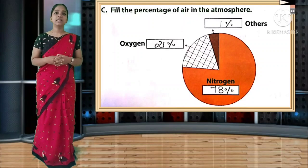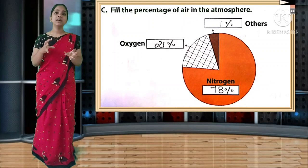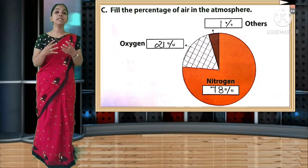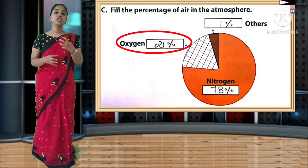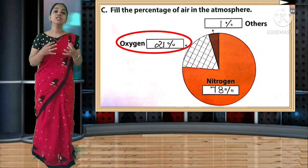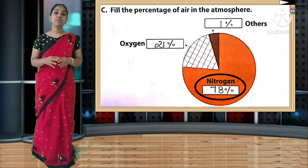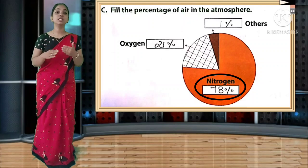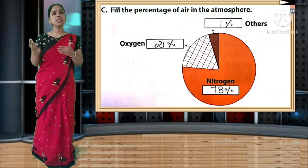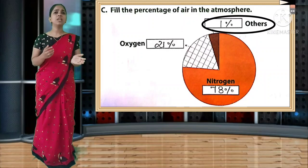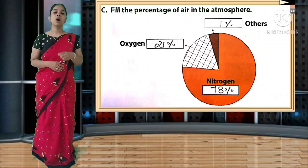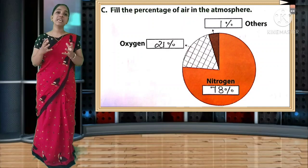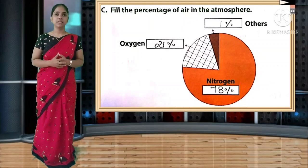Fill the percentage of air in the atmosphere. Here a pie chart is given showing oxygen, nitrogen and others. Oxygen - 21%. Nitrogen - 78%. Others - 1%. If you add 78% and 21%, only 1% balance will be there. So 1% other gases are present.